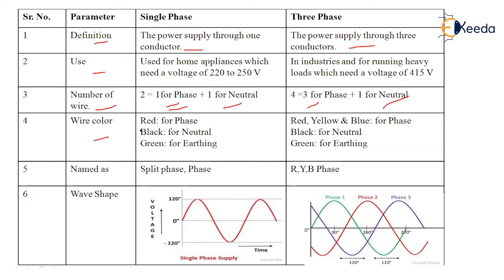The fourth parameter is wire color. In single phase, red is used for the phase or live wire, black for the neutral wire, and green for earthing. In three phase supply, red, yellow, and blue are used for the three phase or live wires, black for neutral, and green for earthing. The black and green wire meanings remain the same in both systems, only the number of wires changes, maintaining uniformity so any electrician knows which wire is used for what.